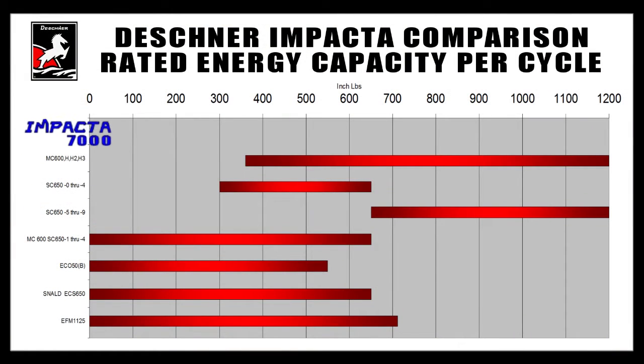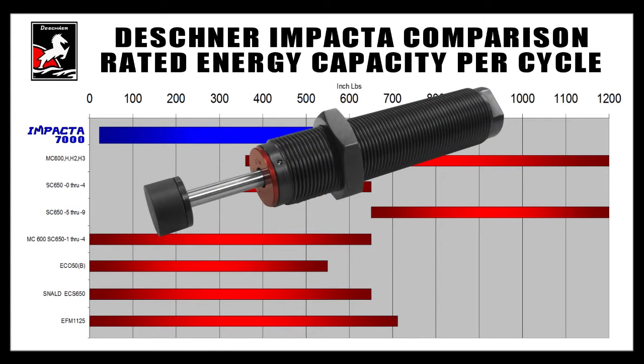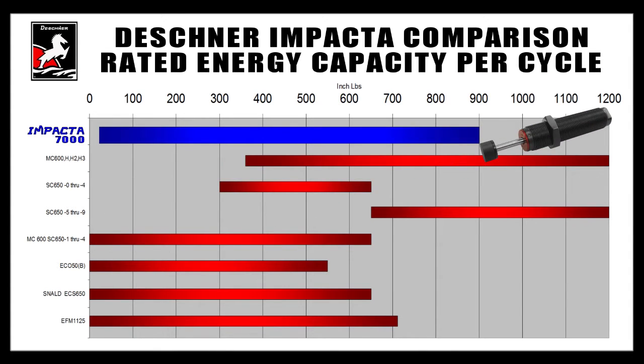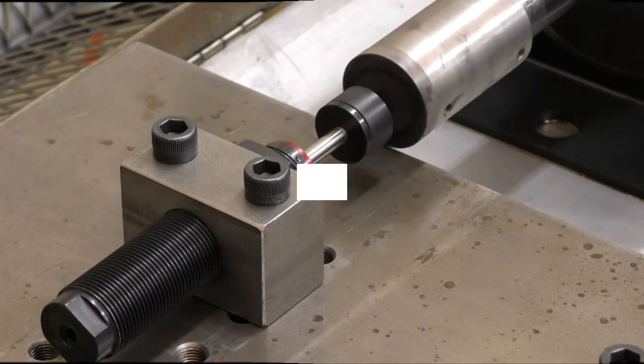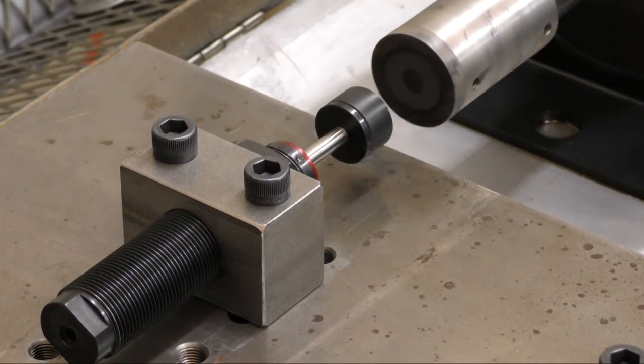What's special about this shock is in comparative testing, a single Impacta covers a wider load handling range than its competitors, which means one Impacta covers a wider variety of applications. We've also tested this and rated it at a higher cycle rate, which basically means that it can work as fast as you can.